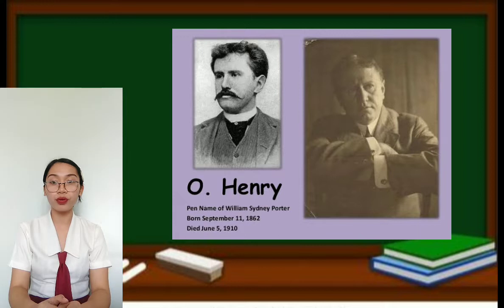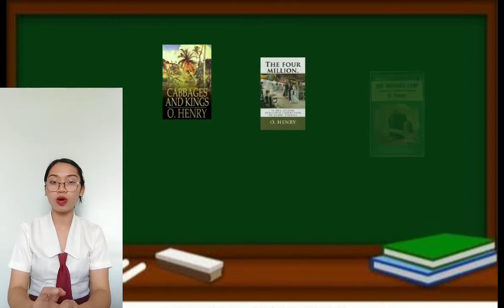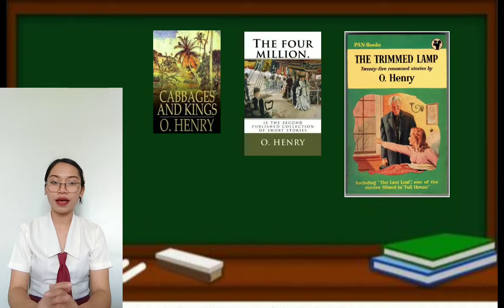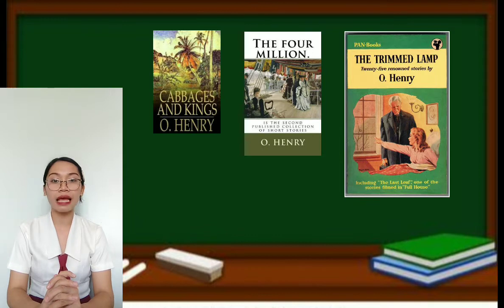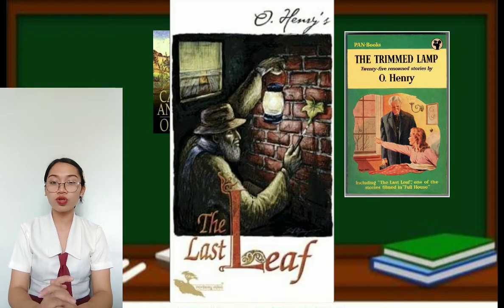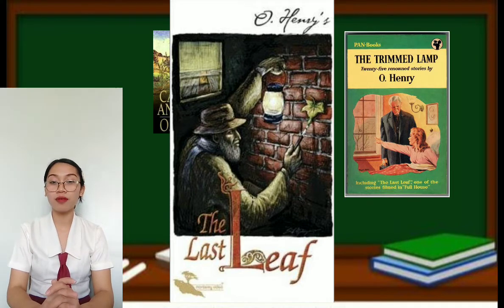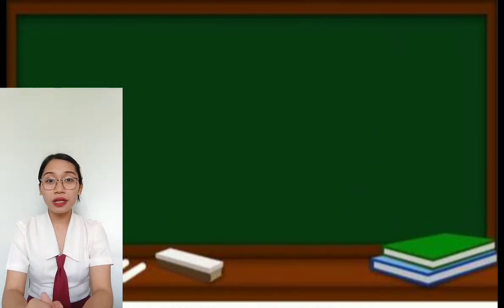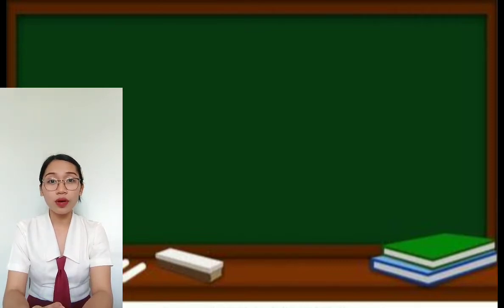His first book, Cabbages and Kings, in 1904, depicted fantastic characters against exotic Honduran backgrounds. Both The Four Million in 1906 and The Trimmed Lamp in 1907 — in which his short story The Last Leaf was compiled — explored the lives of the multitude of New York in daily routines and searchings for romance and adventure. So, you are knowledgeable about the author. Right now, I will read the story and I want you to listen carefully and understand its meaning, because after I read the story, we'll have a quiz.